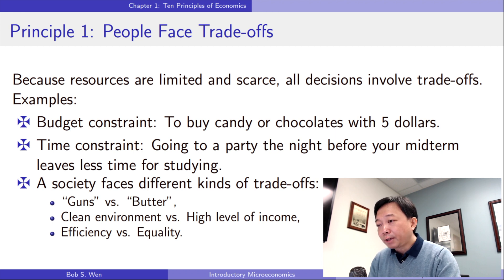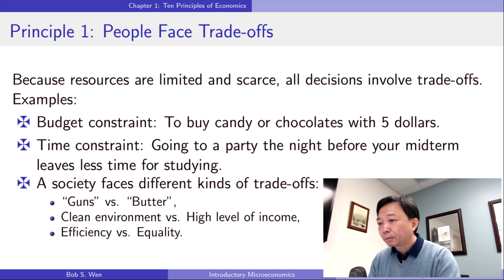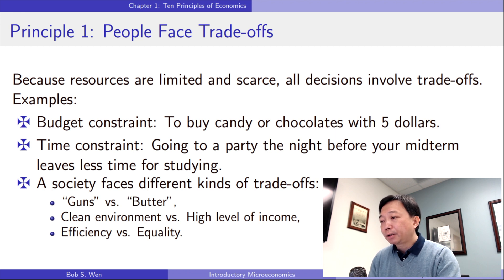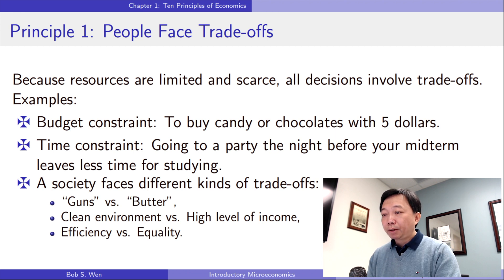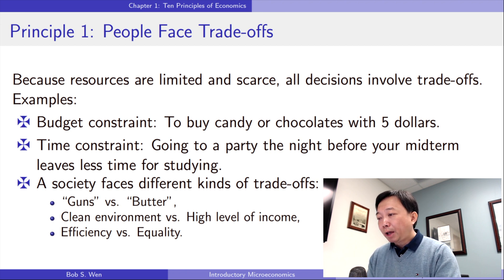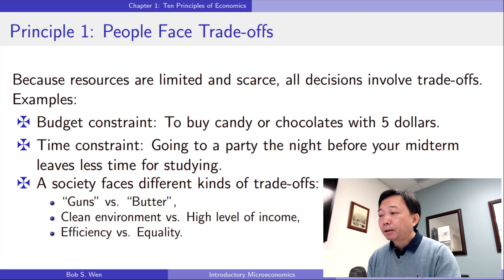Another trade-off society faces is between efficiency and equality. Efficiency means the society is getting the maximum benefits from its scarce resources. Equality means that those benefits are distributed uniformly among society's members. We could represent the economy with an economic pie — efficiency refers to the size of the pie, and equality refers to how the pie is divided into individual slices.